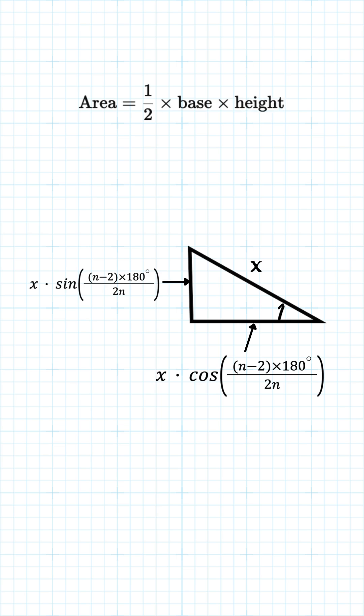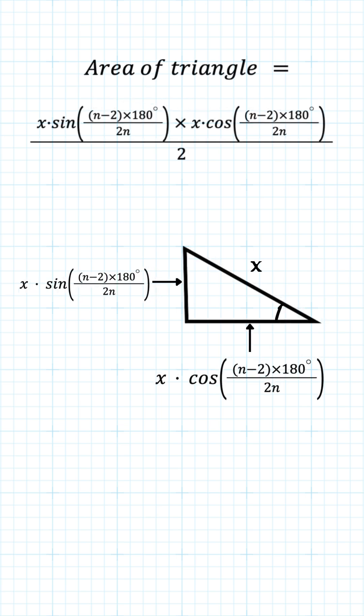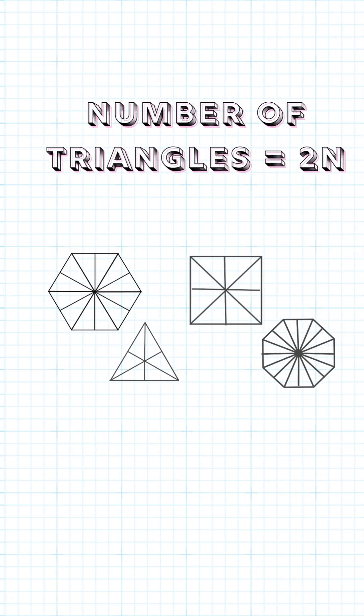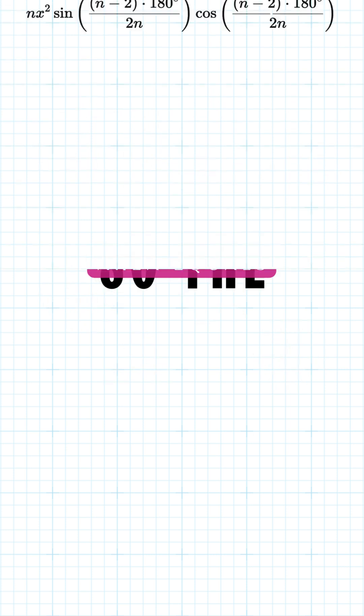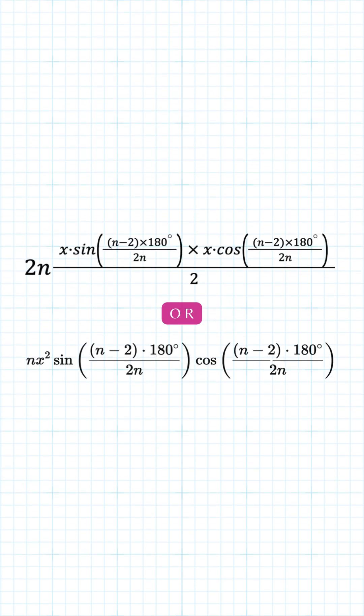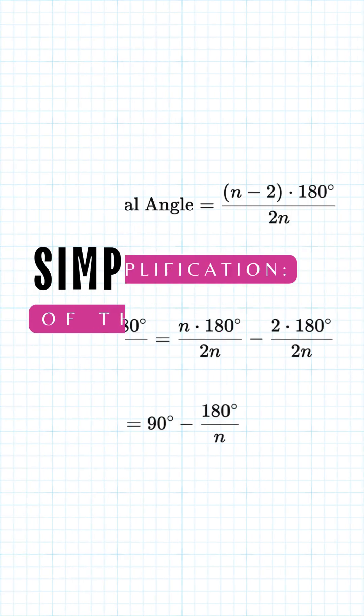Now since area of this triangle is half times base times height, this is the area. The number of triangles in these polygons is 2 times the number of sides in them. So this is the final formula. Here is a quick simplification of the formula.